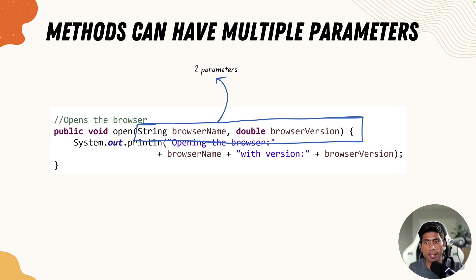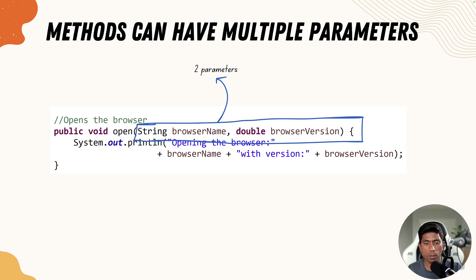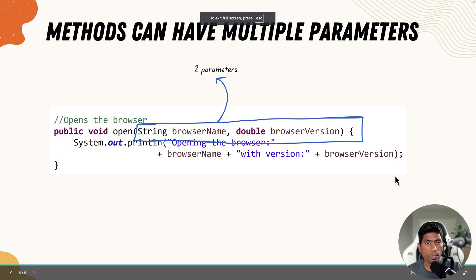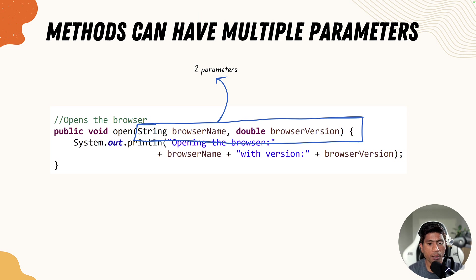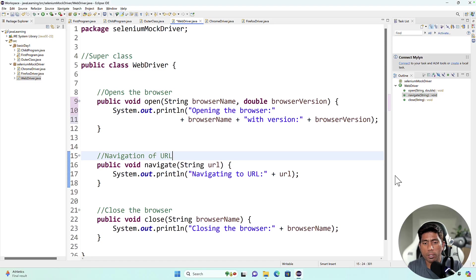That's all we need to know about methods so far. Let's use the knowledge we have and work with methods hands-on, and this time for the first time we are going to see how we can return a value out from a method.